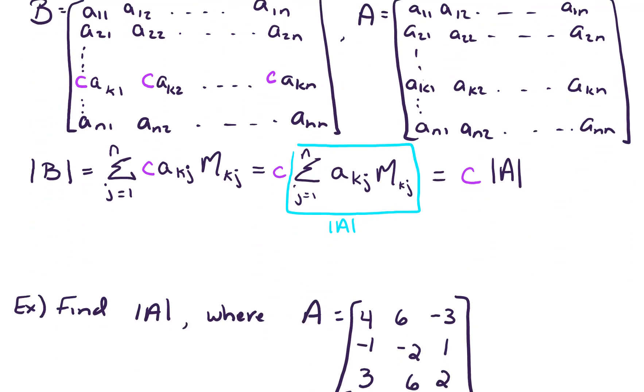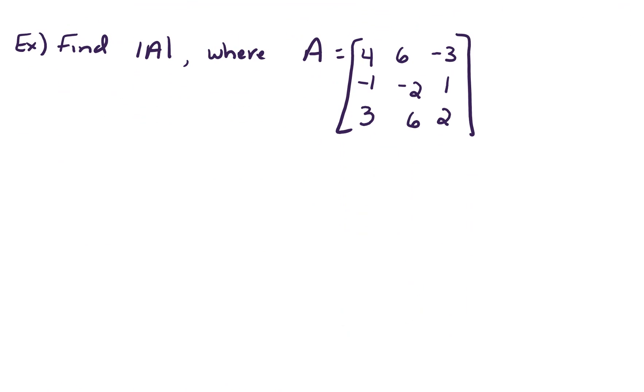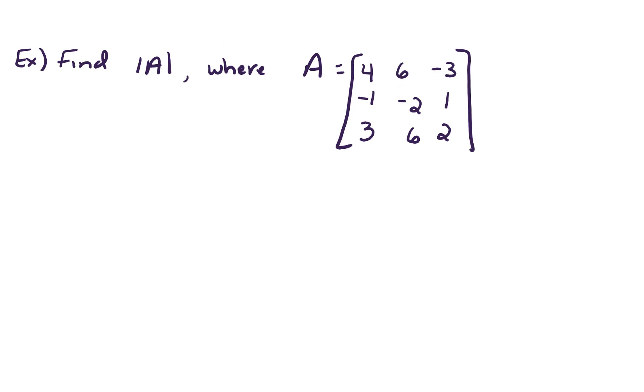Let's move on to look at a few examples. So this first example, we want to find the determinant of A where A is given, it's a 3 by 3. And we could certainly expand along any row or column, and that would involve a fair amount of work. But if we can obtain a column or row with lots of zeros, our life will be a lot easier. So zeros are better because they eliminate the computation of some of those minors.